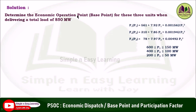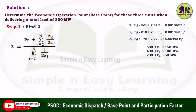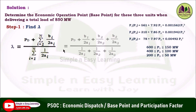Step 1: Find lambda using the formula — lambda equals (Pd + summation of bi/2ai for i=1 to n) divided by (summation of 1/2ai for i=1 to n). Here n equals 3, so i varies from 1 to 3. The formula becomes: Pd plus b1/2a1 plus b2/2a2 plus b3/2a3, divided by 1/2a1 plus 1/2a2 plus 1/2a3.